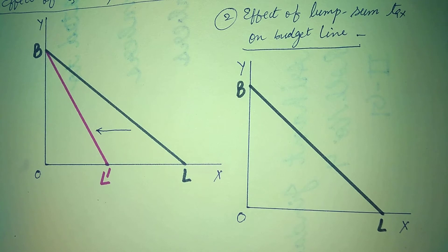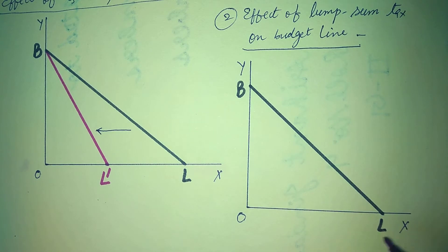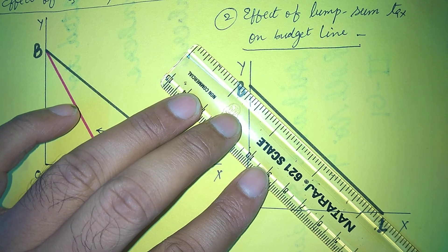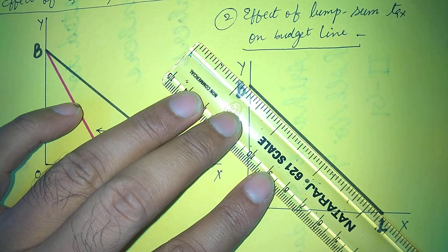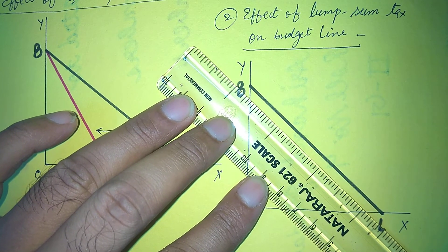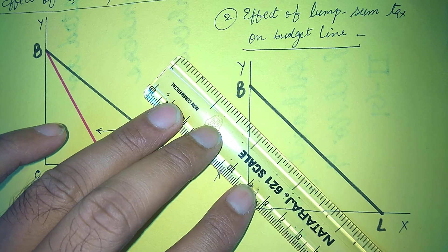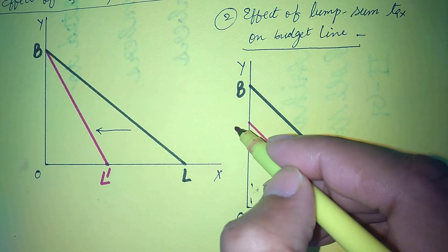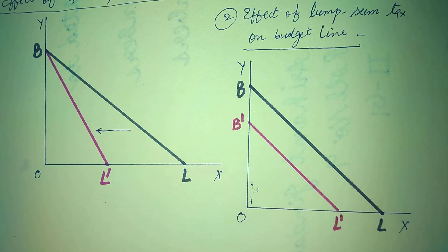Now suppose the government imposes a lump sum tax on the consumer. With a lump sum tax, the consumer's income becomes disposable income — it reduces. The consumer can buy less of both goods. The budget line shifts inward parallel to the original budget line. This is the effect of lump sum tax on the budget line.